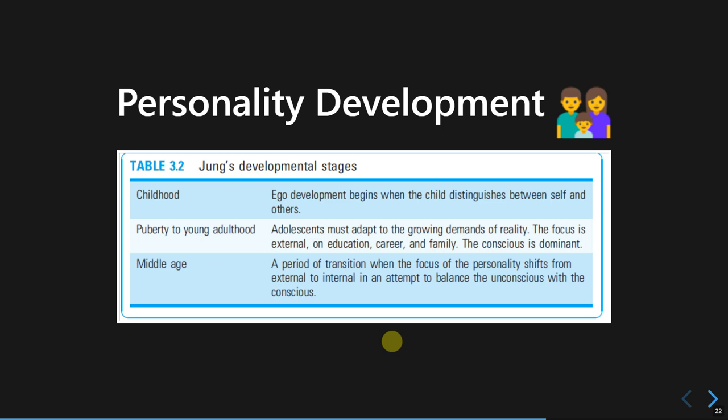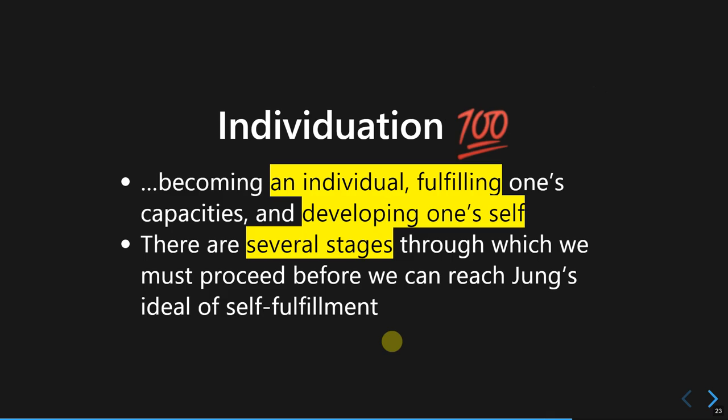The idea of healthy personality never crossed Freud's mind, because in Freud's view everyone is mentally sick. This is also a deviation from Freud's theory, because Jung would say there is a way for people to be healthy and to grow as a normal person. In order to obtain a healthy personality, one must go through the individuation process.